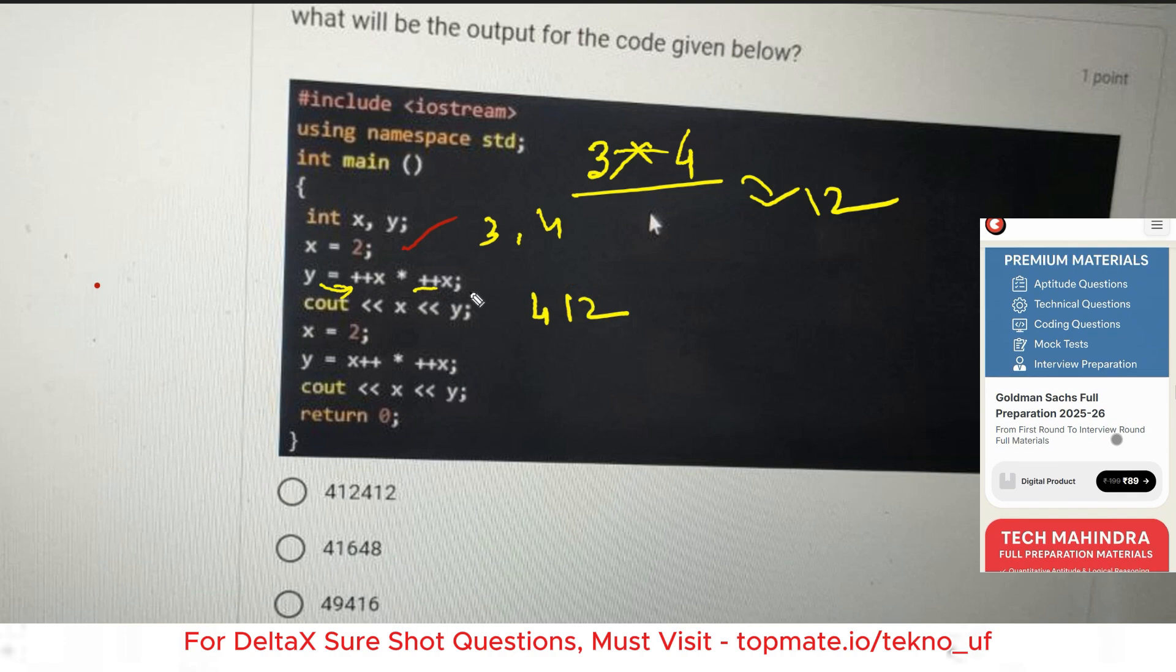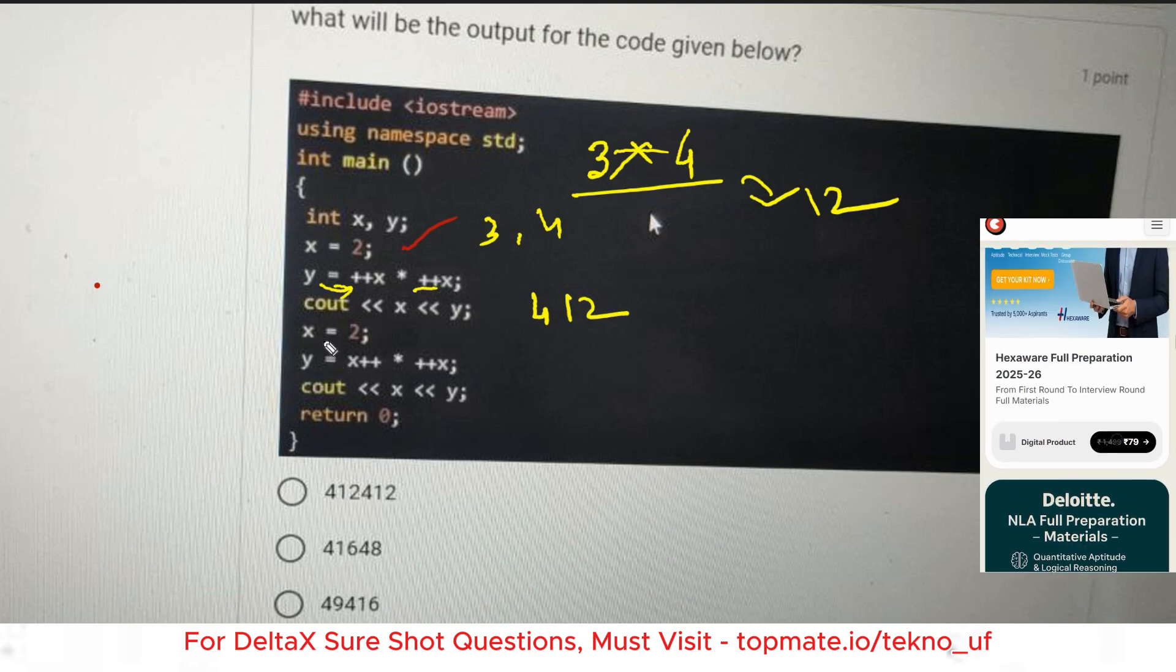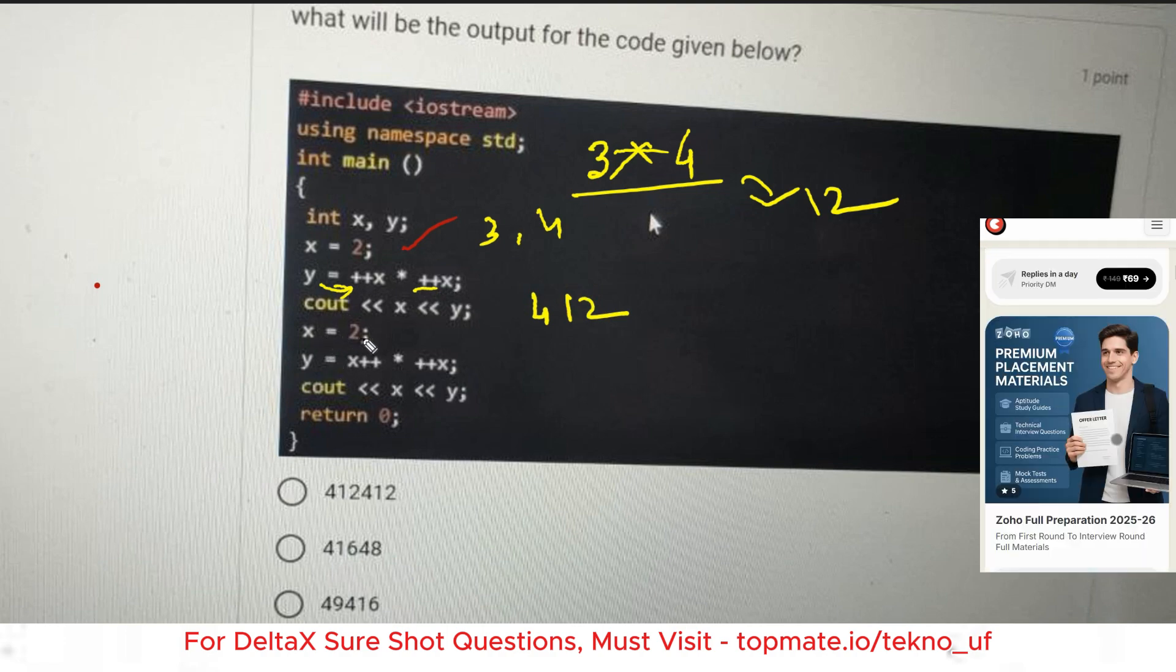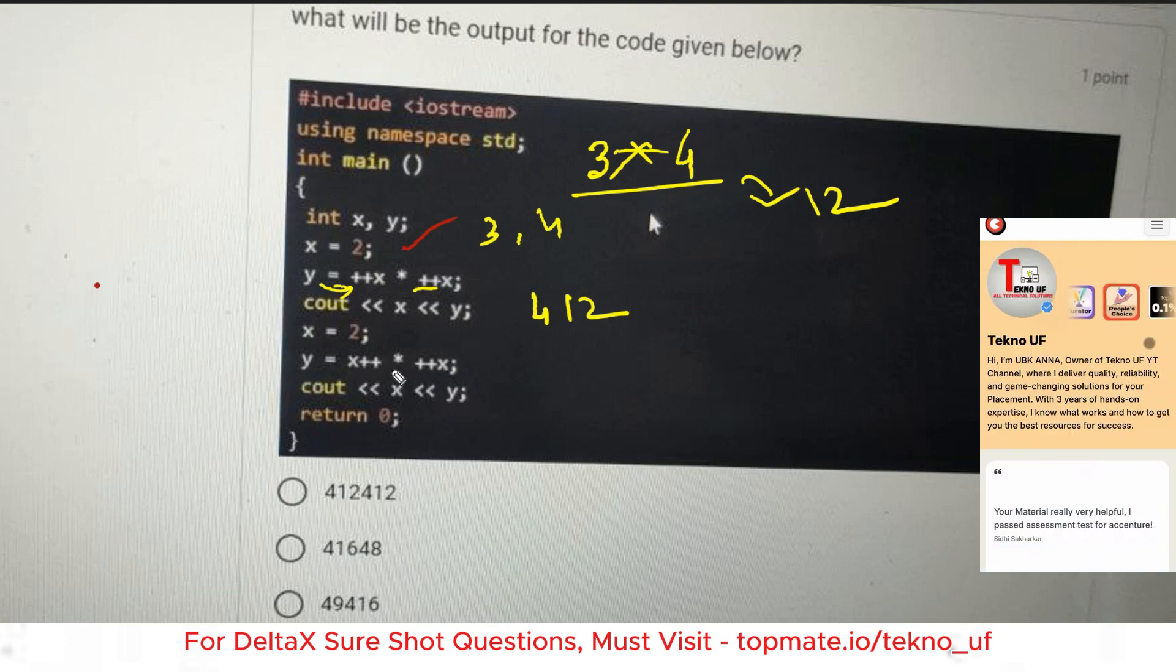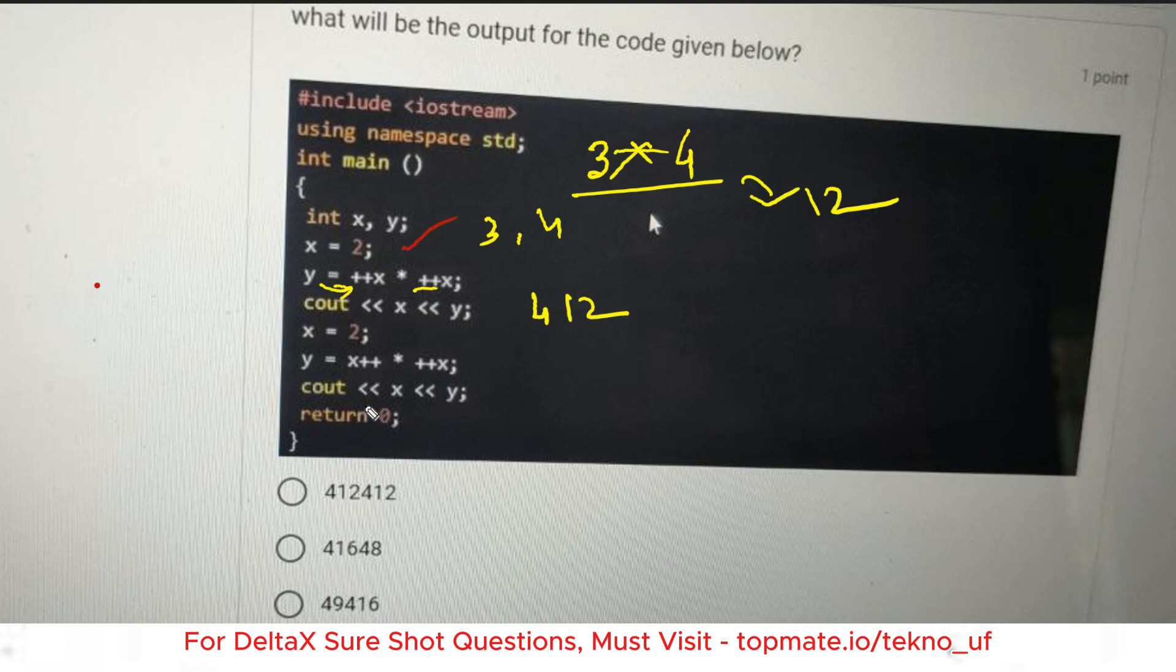If we are printing the value of x and y, the value will be x is 4 and y is 12. In the next line, the value of x is re-initialized. X is equal to 2, y is equal to post increment of x and then a pre-increment of x.